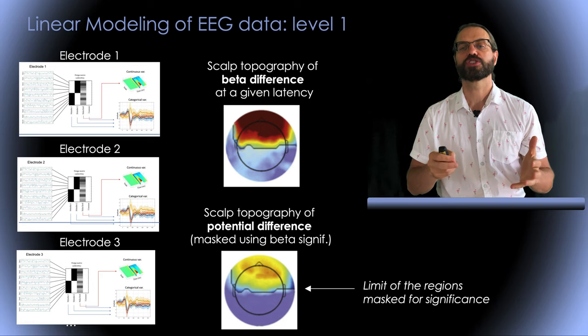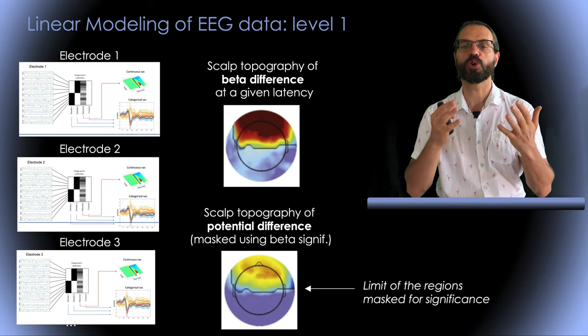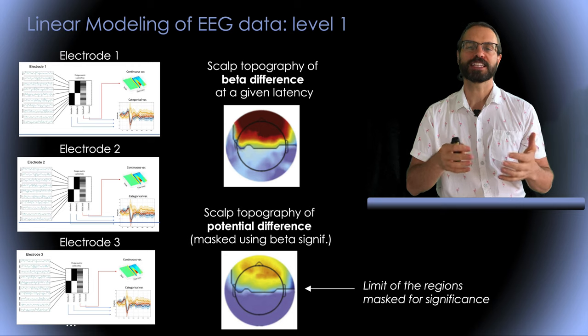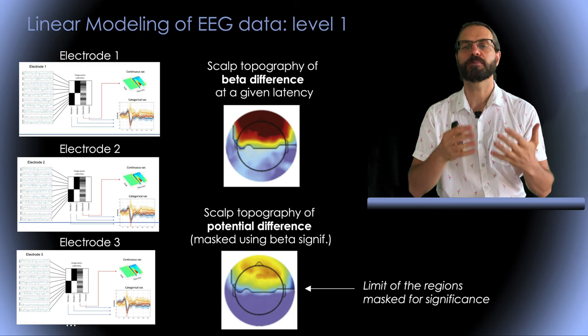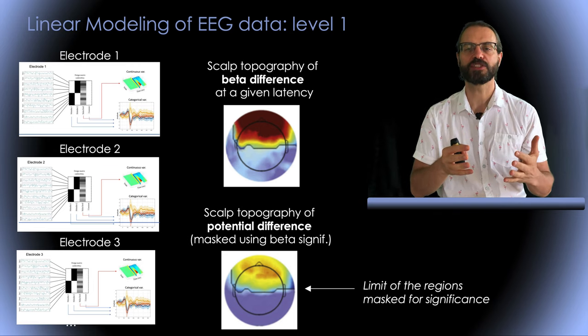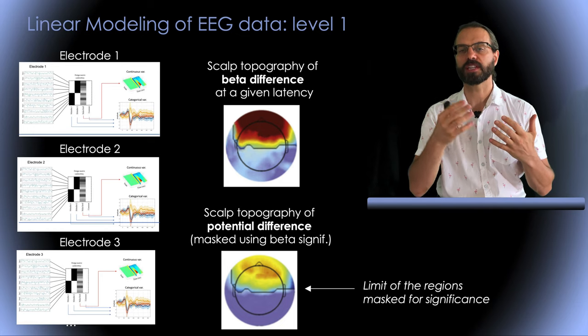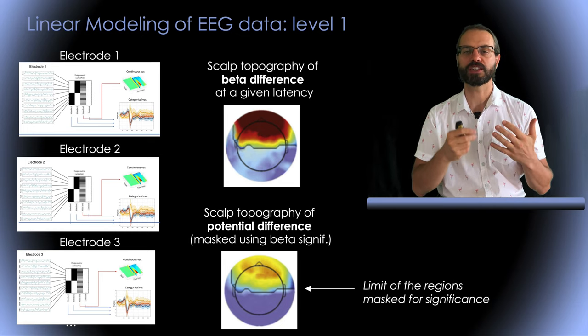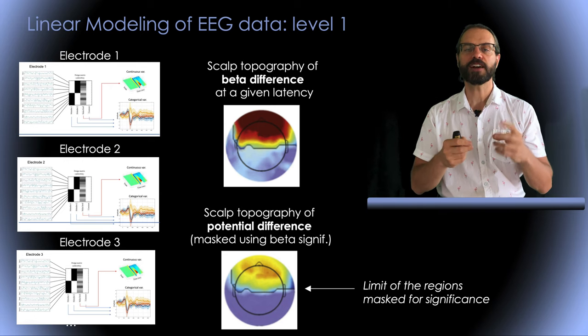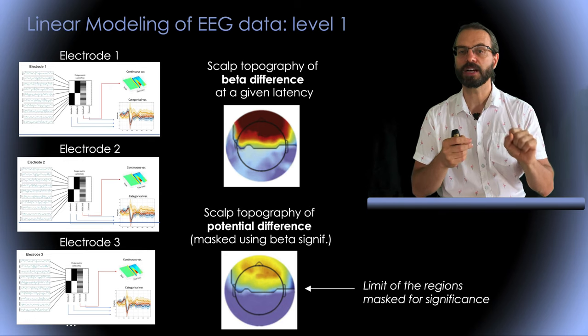Of course, we have more than one electrode, so we have to repeat that for all electrodes. Then we can extract scalp topography of beta parameters at latency of interest and also assess significance using the 95% confidence interval, as I just mentioned.